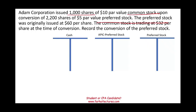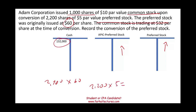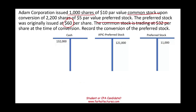We are given the preferred stock original issuance price of $60. This is important because we want to know how much preferred stock we have on the books, since we are going to retire those shares. We had 2,200 shares of preferred stock originally issued at $60, so 2,200 times 60 gave us $132,000 in cash when originally issued. The preferred stock par value is $5, so 2,200 times $5 equals $11,000 on the books. The remainder is additional paid-in capital for preferred stock, which is $121,000. So on the balance sheet right now, we have $121,000 in APIC preferred stock and $11,000 in preferred stock.